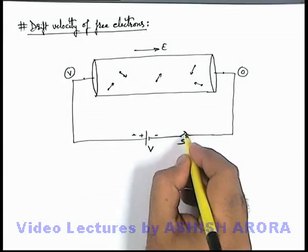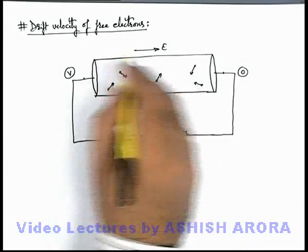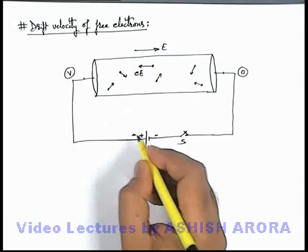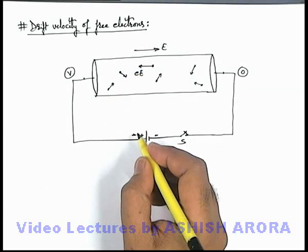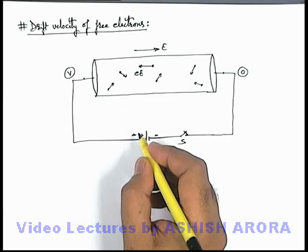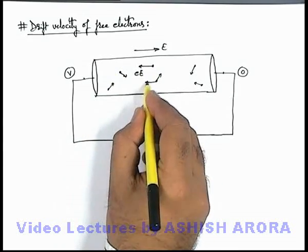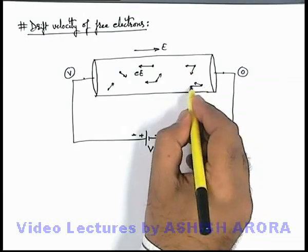But as soon as the switch is closed and electric field is established, every electron will experience a force eE in the direction opposite to the electric field, due to which these electrons have a tendency to move toward left and all these electrons will start moving toward left.